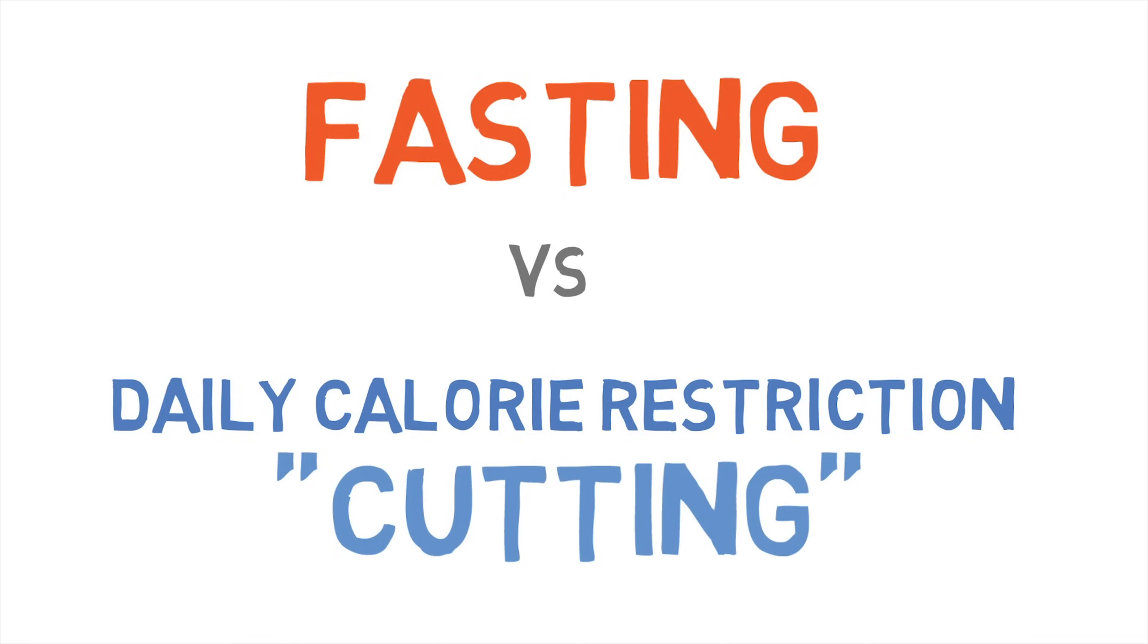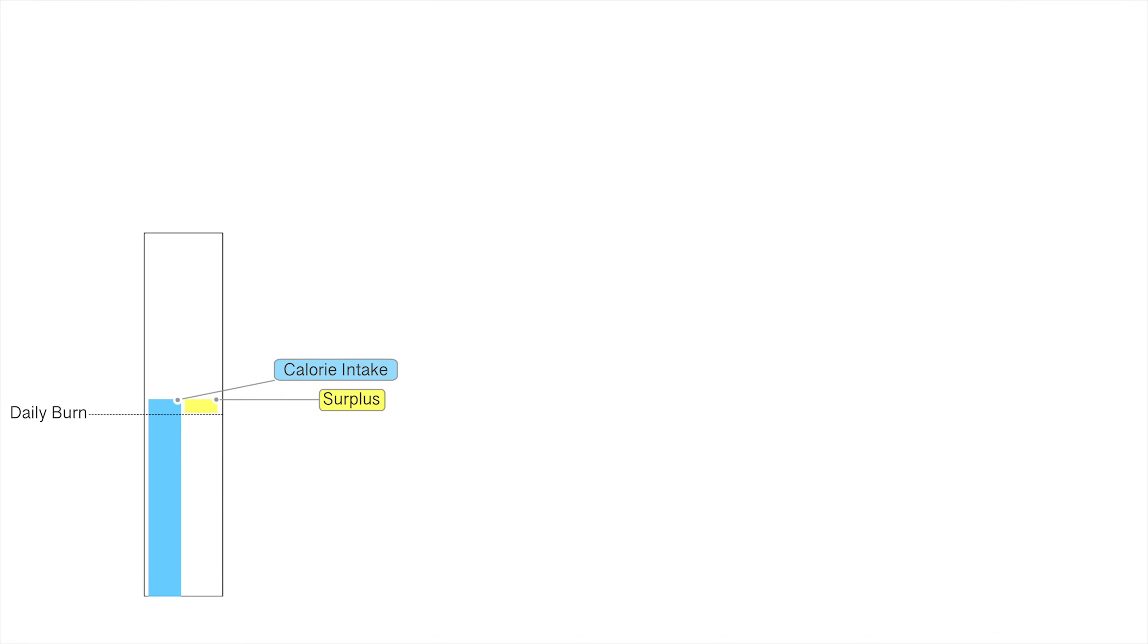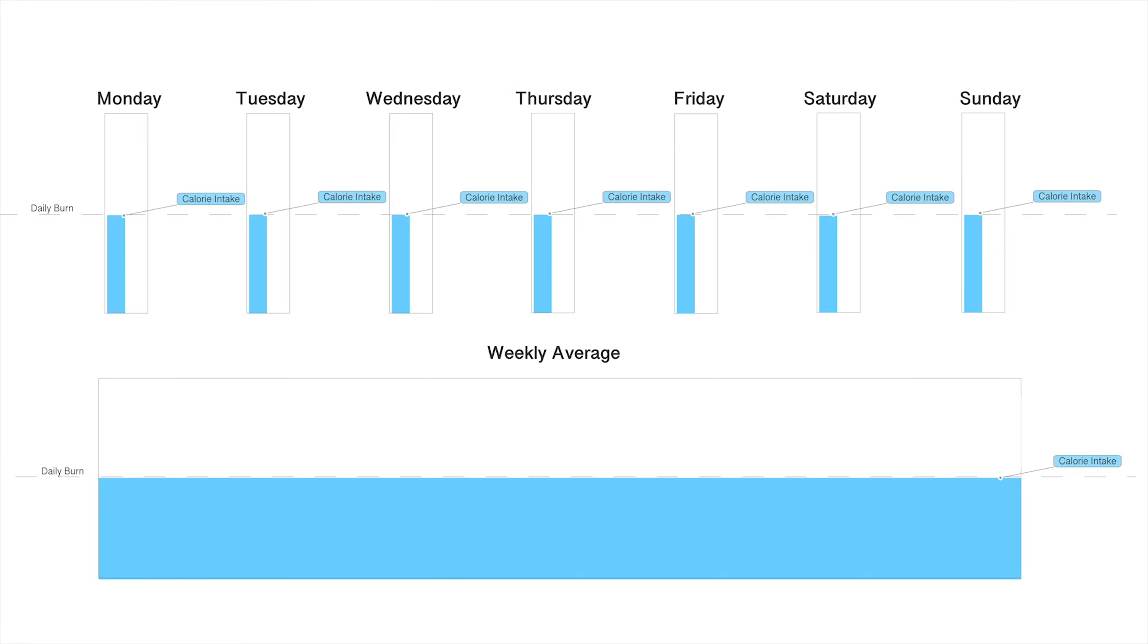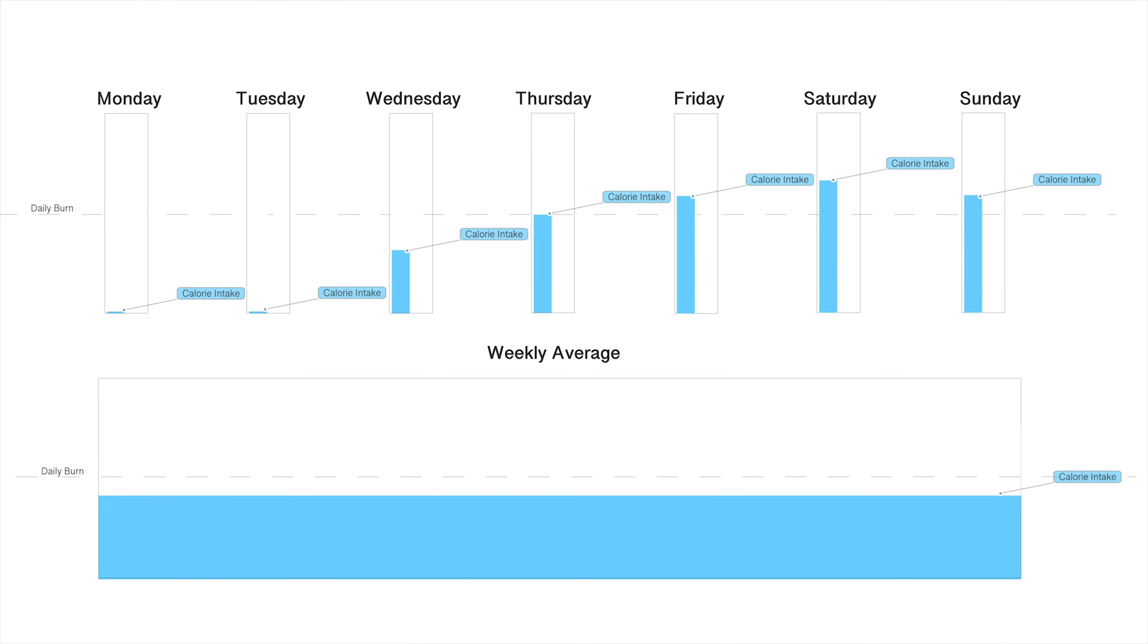Fasting, on the other hand, involves creating a deficit, but just on a larger timescale. While someone on a traditional cut is in a daily deficit, someone doing periodic fasts is looking at the bigger picture, creating perhaps a weekly deficit. At the end of the week, they're in a deficit, but there may be days in that week where their body still benefited from the physiological effects of being in a surplus.